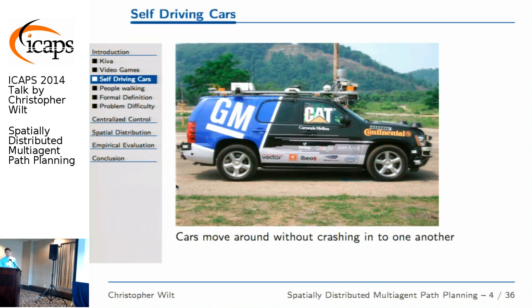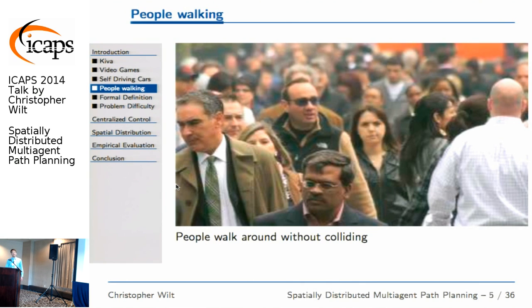Self-driving cars are a futuristic example where this would be really awesome — the cars would know they don't want to crash into each other, but also want to get their passengers to the goal as quickly as possible, keeping in mind what the other cars are doing. So our car would avoid traffic for us. We actually solve this type of problem ourselves every single day — when we all came into this room, we selected a destination and got there without crashing into one another, so this is another example of a multi-agent path planning problem.